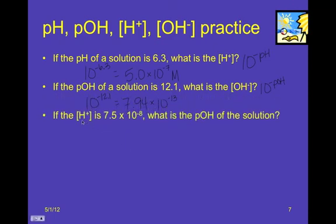So, now, if the hydrogen ion concentration is 7.5 times 10 to the negative 8, what's the pOH?